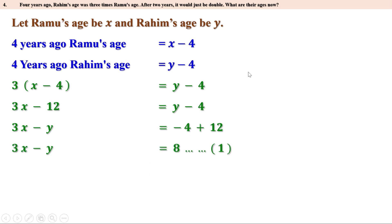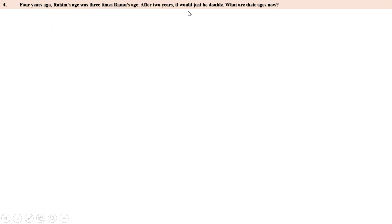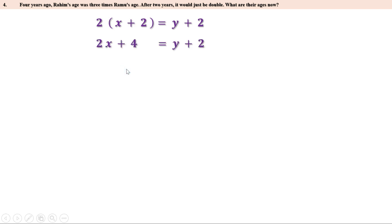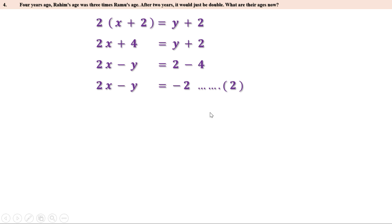After 2 years, Ramu's age will be x plus 2 and Rahim's age will be y plus 2. Given that Rahim's age will be double Ramu's: 2 into (x plus 2) equal to y plus 2. Expanding: 2x plus 4 equal to y plus 2, so 2x minus y equal to minus 2. Let this be the second equation.